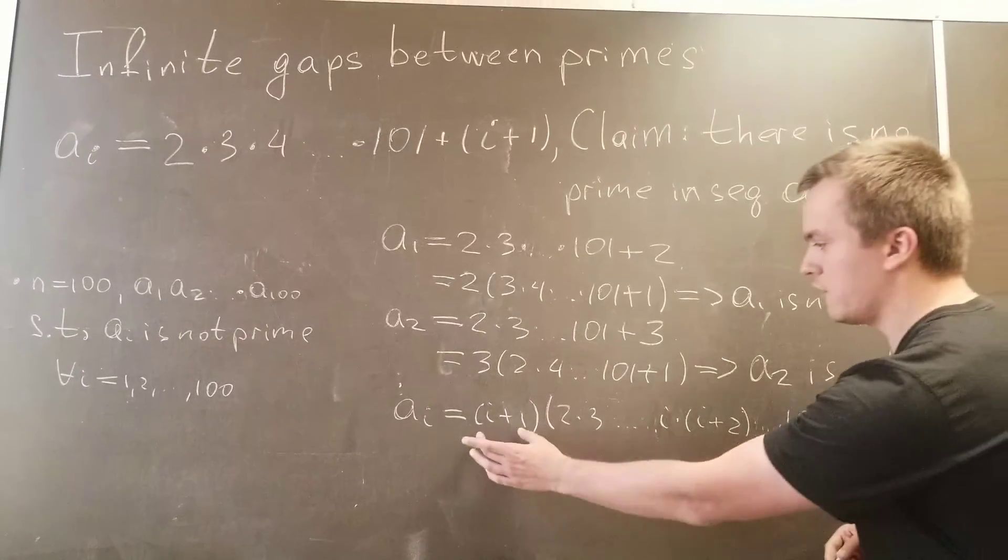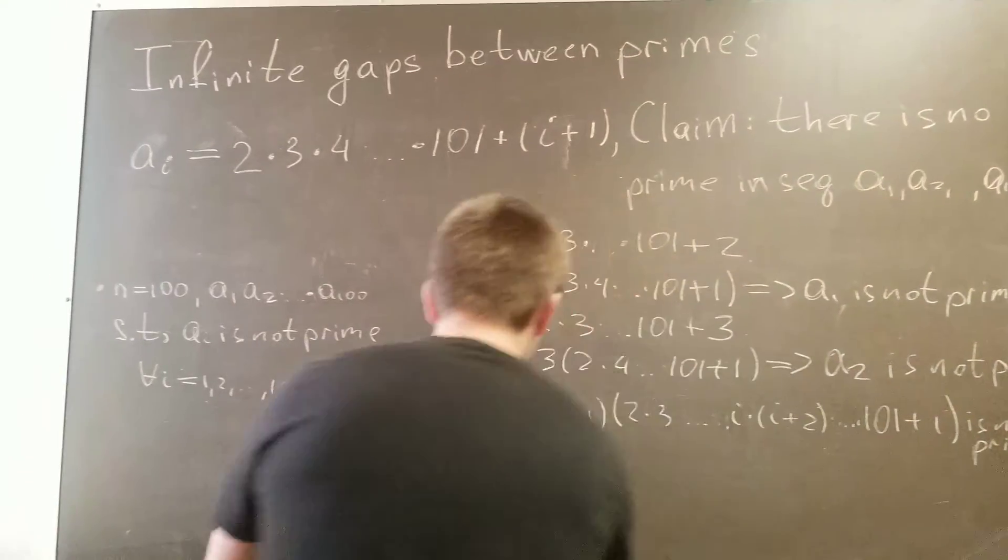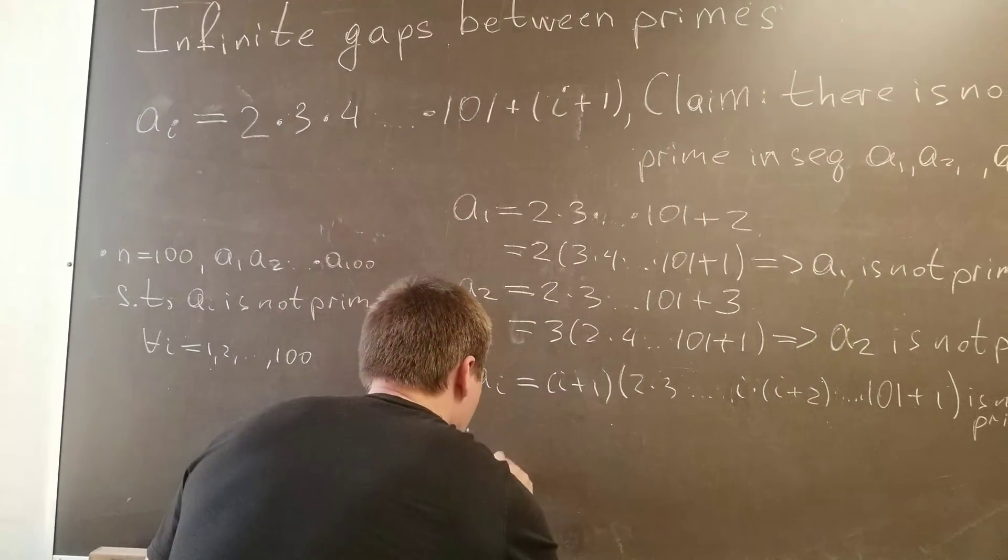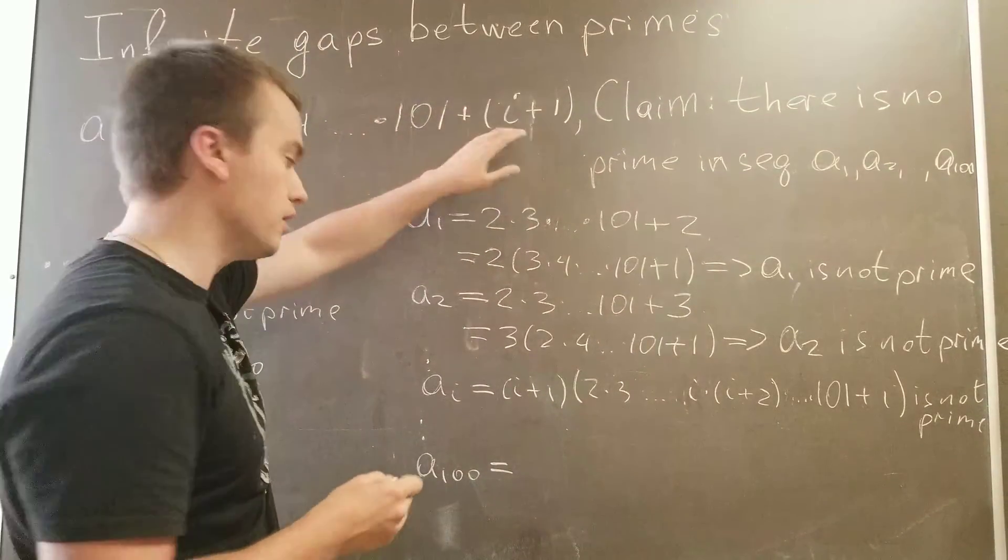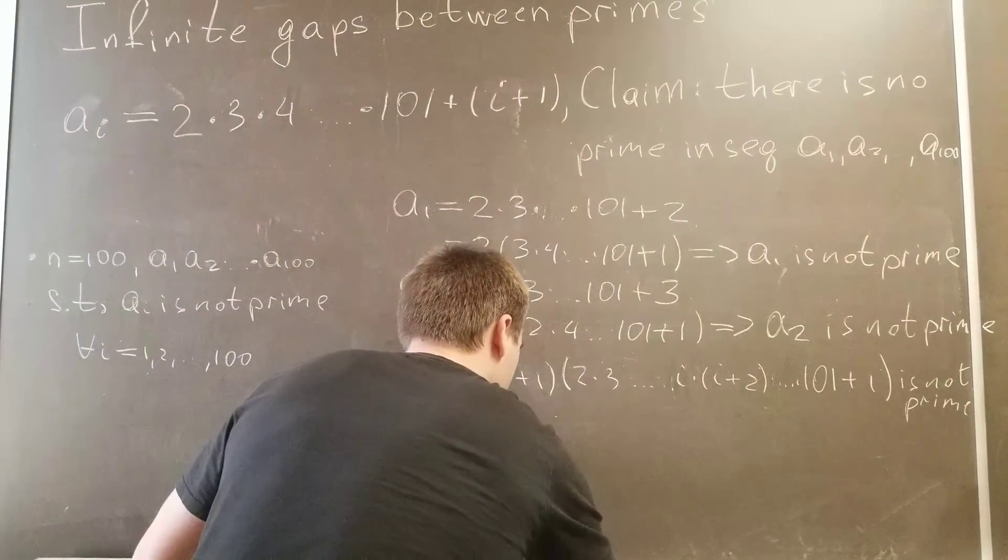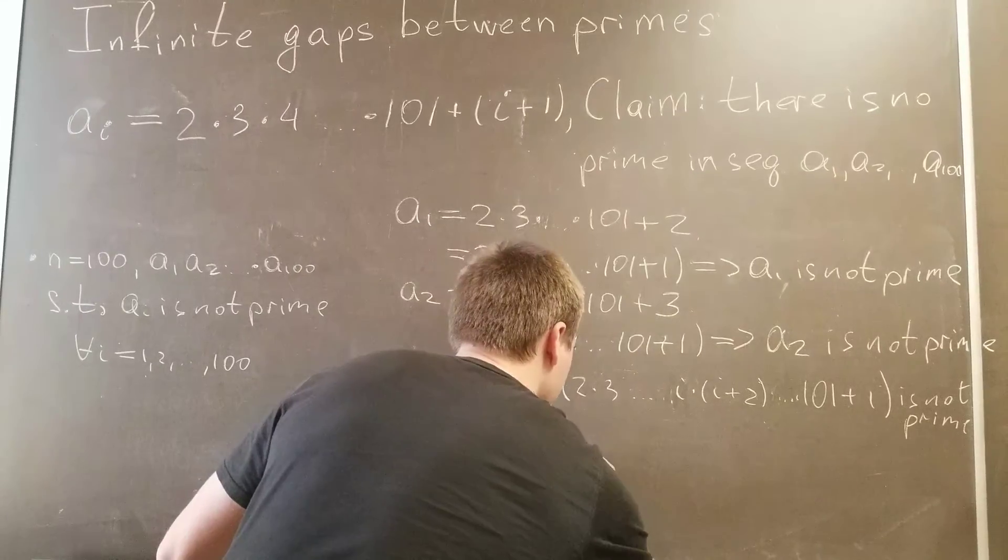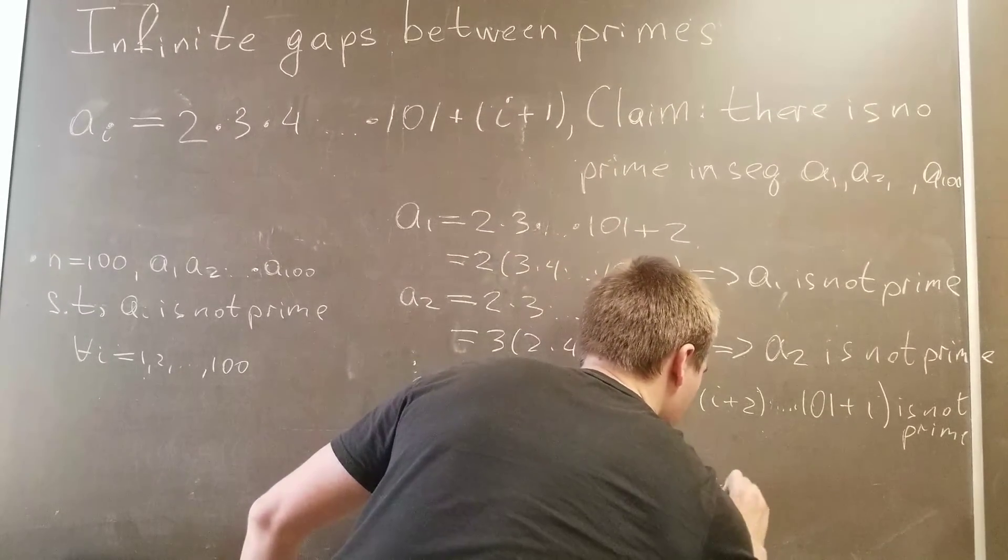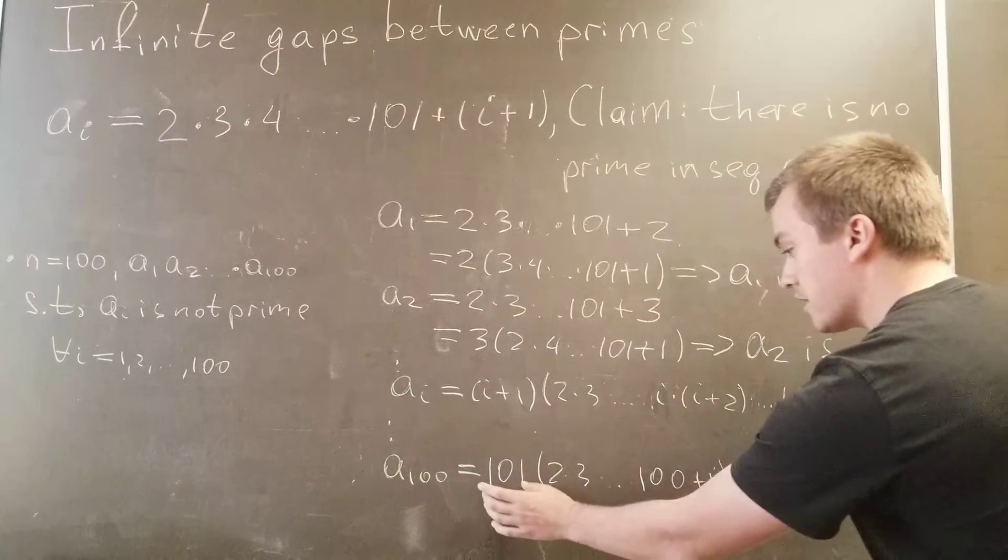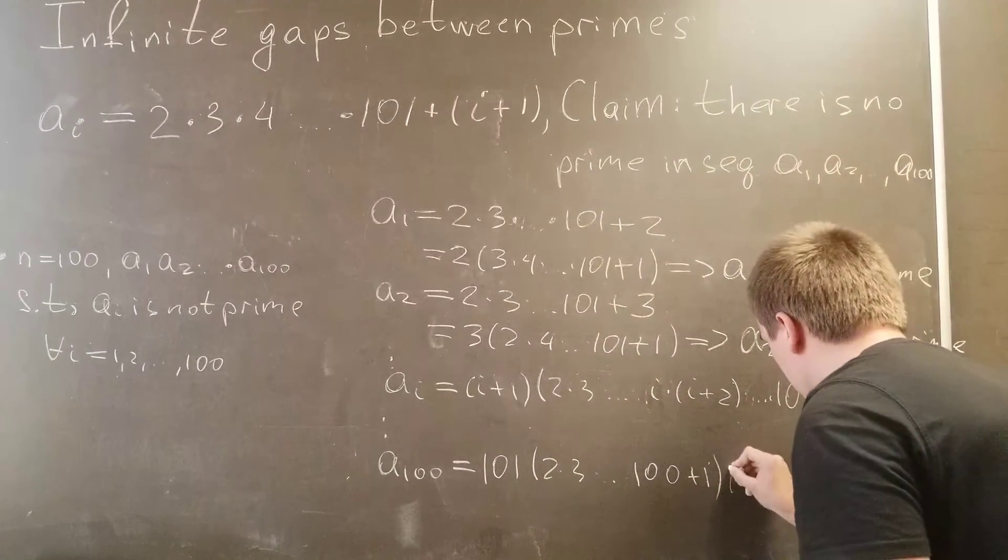Why? Because you again have two factors. And our last step in this proof: a_100 is going to have 101 as the last term. So I'm going to factor out 101, and then we'll get 2 times 3 times... times 100 plus 1. And this number is again not prime.